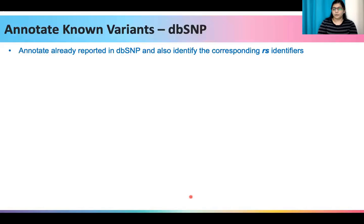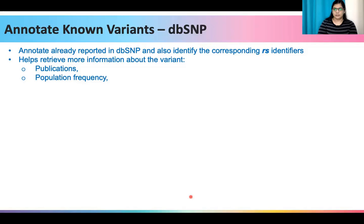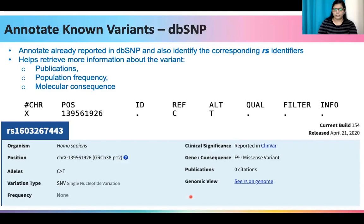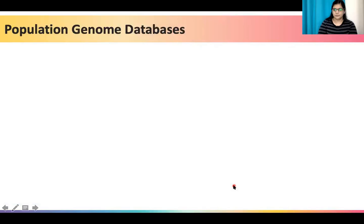Annotation of known variants, such as those reported in dbSNP, and finding the corresponding RSID associated with the variant can help uncover additional information already reported in the dbSNP database — such as the publications that cite the variant, the population frequencies, and its molecular consequence. For example, the previous variant shown in VCF format has a corresponding RSID, and viewing this RSID on the dbSNP database tells us additional information such as the gene in which it lies — the F9 gene — the molecular consequence that it is a missense or non-synonymous variant, and the number of publications associated with this variant.